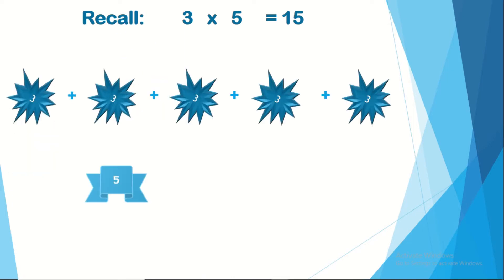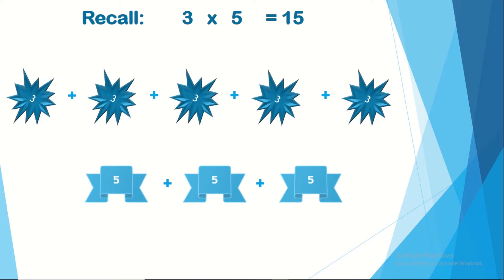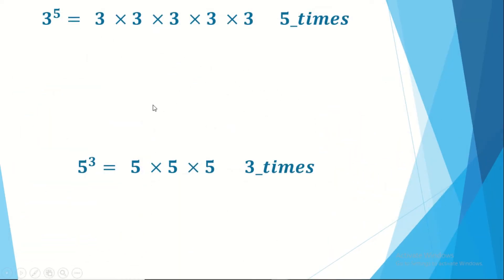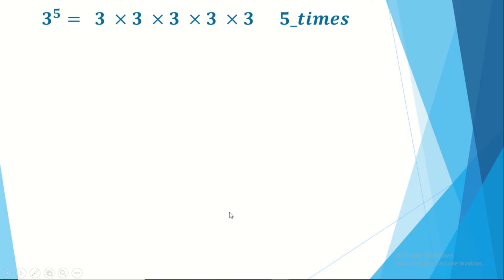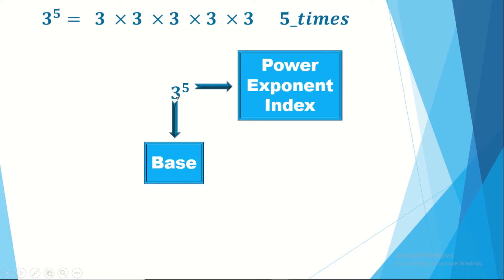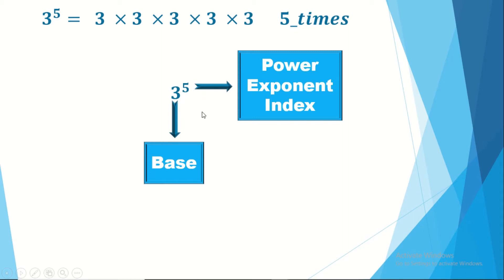First, let's remember what multiplication means. If we have three times five, it's like adding three five times, or five three times. What happens if we multiply a number by itself instead of adding it? Here we talk about what we call the power. For example, three to the power five is three times three, five times. The number written below is the base — it's the number we multiply by itself. The number written above is called the power, or exponent.